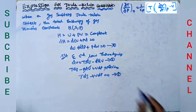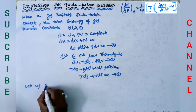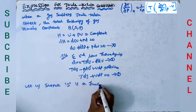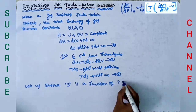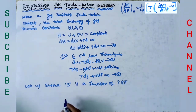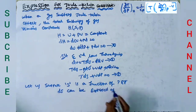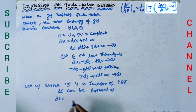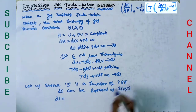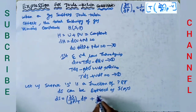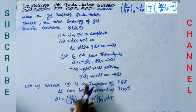Let us suppose entropy S is a function of pressure and temperature. Then the change in entropy dS can be expressed as dS equals (∂S/∂P) at constant T times dP plus (∂S/∂T) at constant P times dT. Substituting this dS value in equation 3 gives equation number 4.